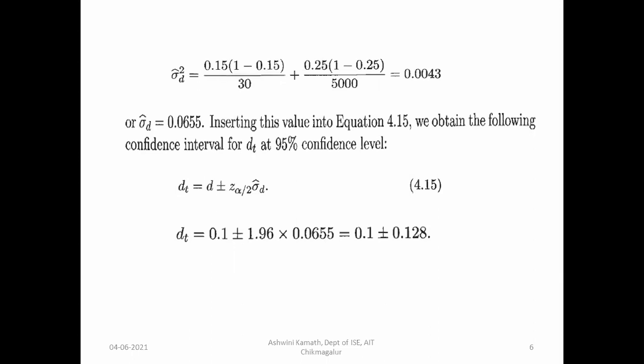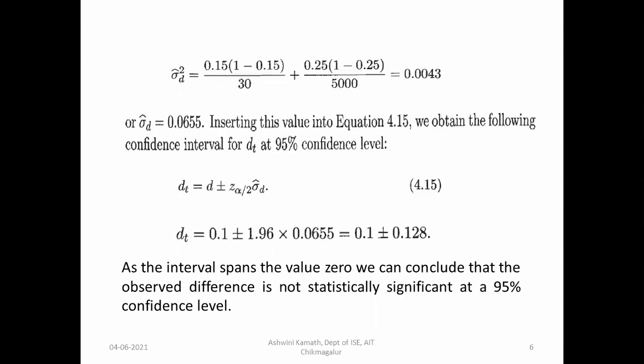Applying the values: Dt = D ± Z_{alpha/2} * sigma_D_cap = 0.1 ± 1.96 * 0.0655 = 0.1 ± 0.128. Adding gives 0.228, subtracting gives -0.028. Since the confidence interval spans the value 0, we conclude that the observed difference is not statistically significant at a 95% confidence level.